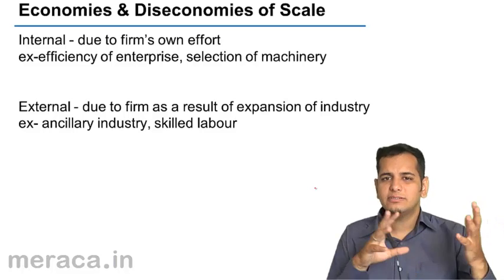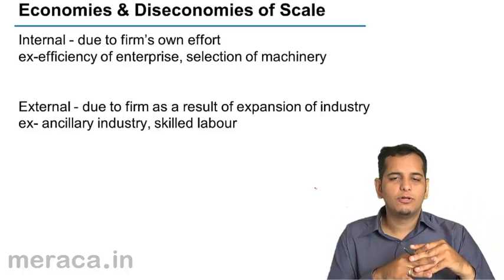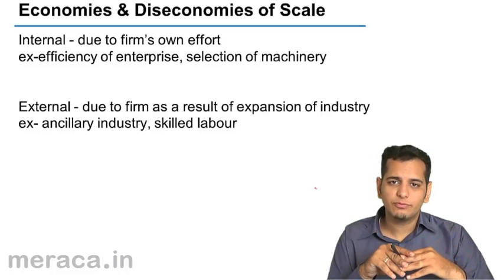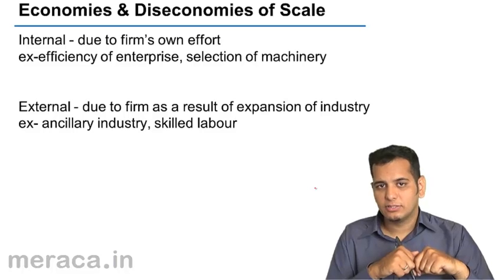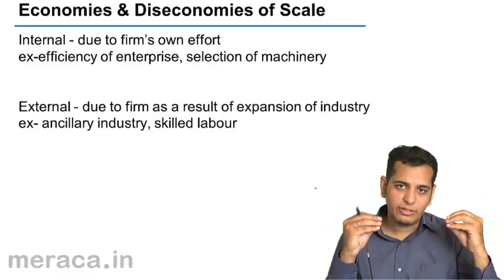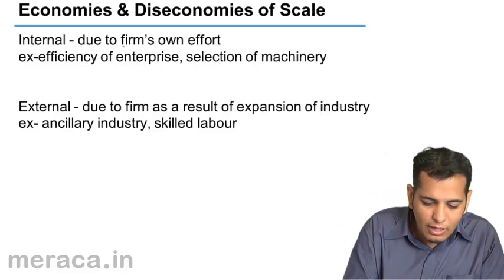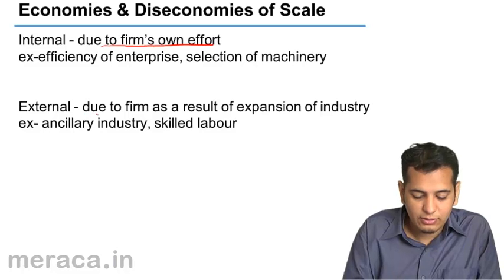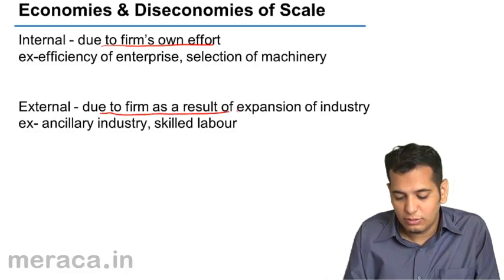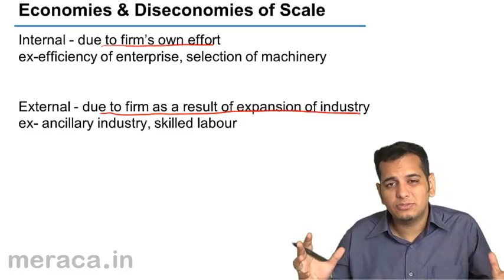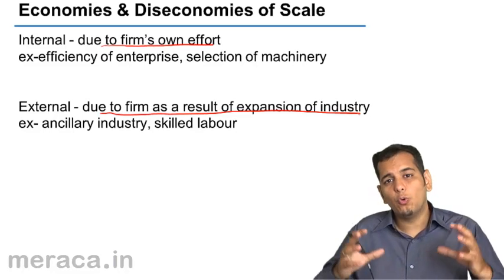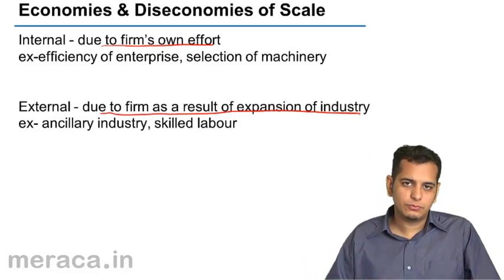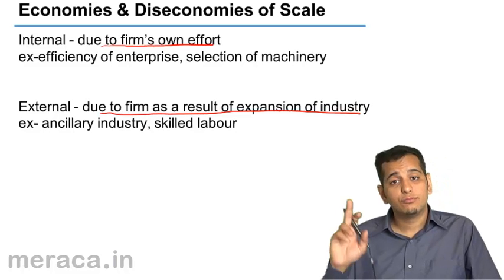Economies and dis-economies which are accrued to a firm occur because of two reasons. First, because of the internal reasons of the firm. Second, because of the external reasons. Internal economies of scale or internal dis-economies of scale are due to the firm's own efforts. However, external economies or dis-economies of scale are due to the expansion of the industry. When the whole industry grows, the firm in that industry also tends to grow, and thus achieves economies of scale from external factors.